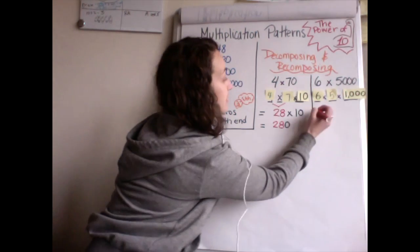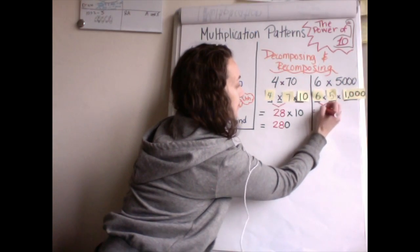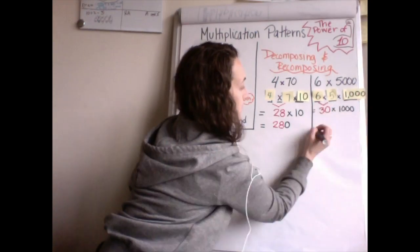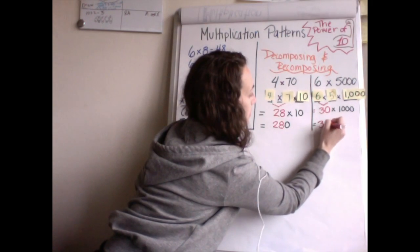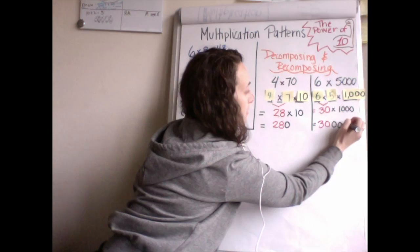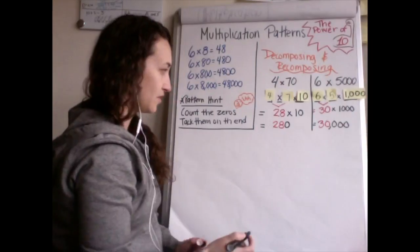And then we do exactly what we did before. We're going to multiply six times five is 30. And we're bringing our 1,000 down times 1,000 and we have our 30. And then we have our one, two, three zeros times 1,000 is 30,000.